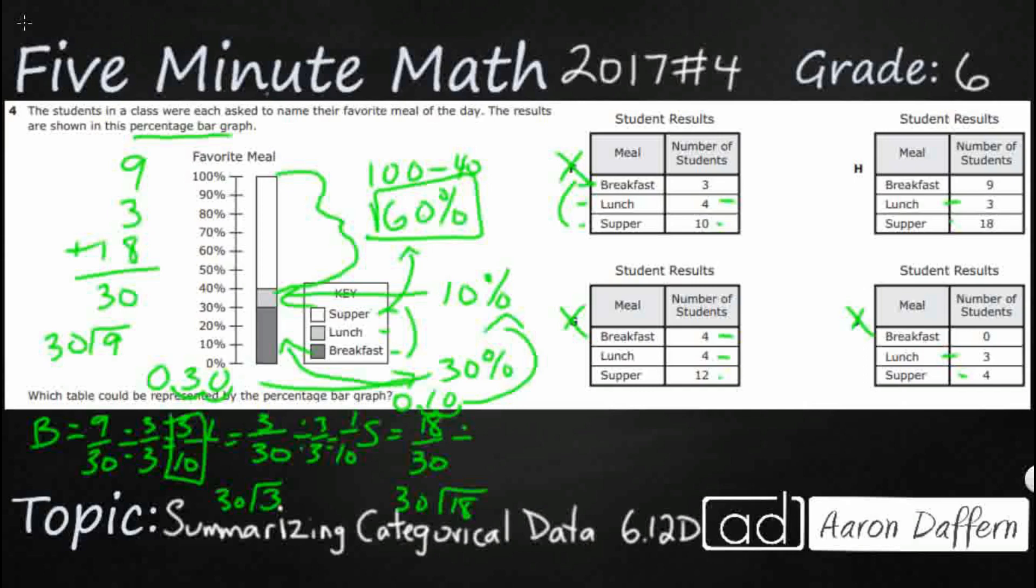And then let's divide this by 3 over 3 and you're going to get 6 over 10, which is 0.6. Move it over twice to get the percent and that's what we get. So our answer is H.